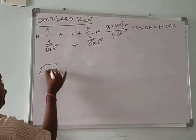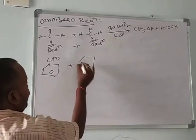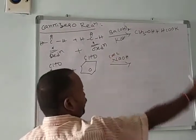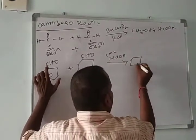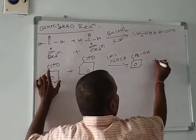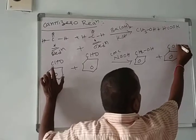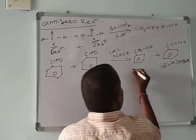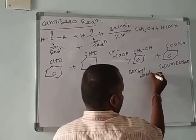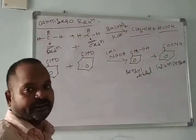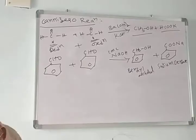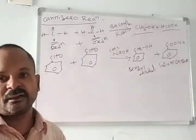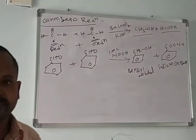In continuation, we will see aldol condensation, ketal condensation, crossed aldol condensation, crossed ketal condensation, and reactions of aldehydes and ketones. After that, we will discuss carboxylic acids. Thank you.